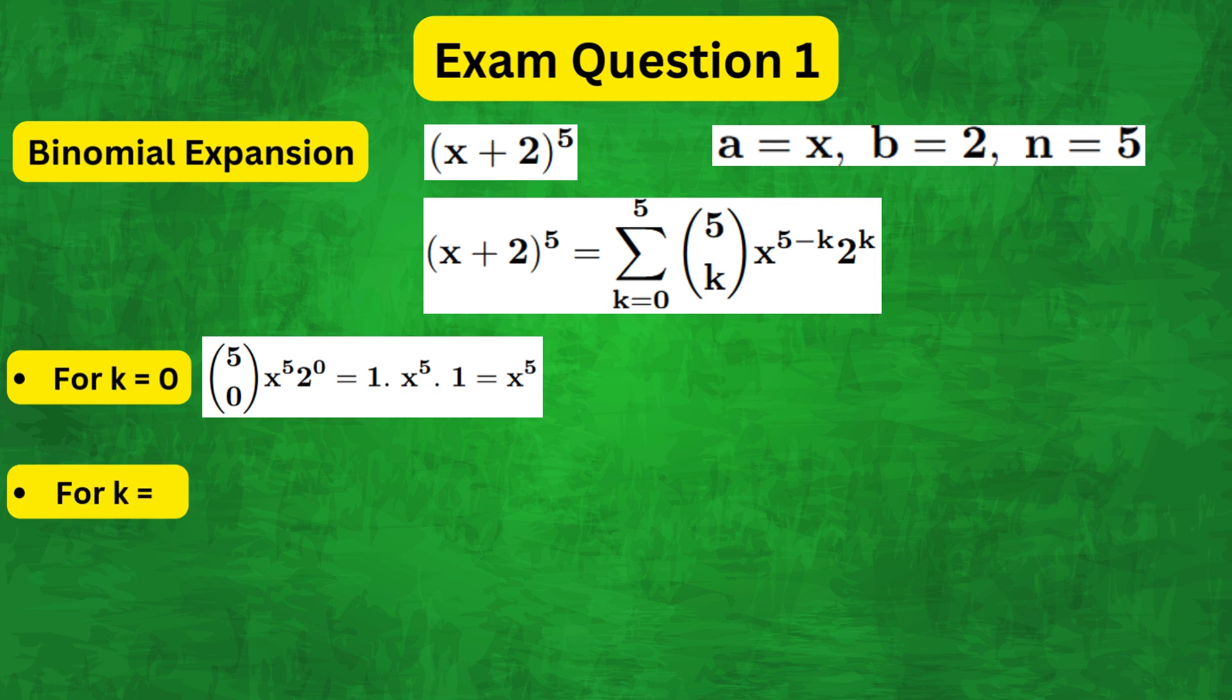For k equals 1 we have 5 combination 1, x to the power of 5 minus 1 times 2 to the 1, which equals 10x to the 4.